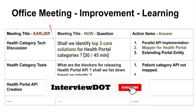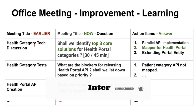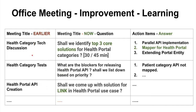If you look at this table, the first column shows the way I usually keep the meeting title. For example: 'health category tech discussion', 'health category test', and 'health portal API creation'. This is how I usually keep the meeting titles — very abstract.